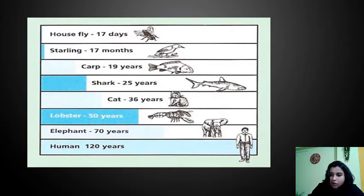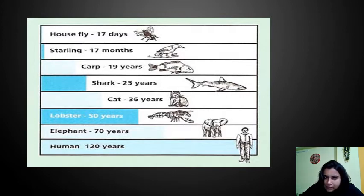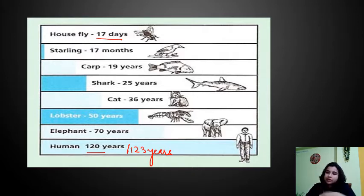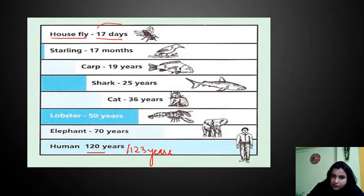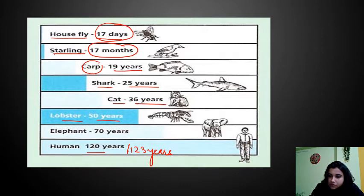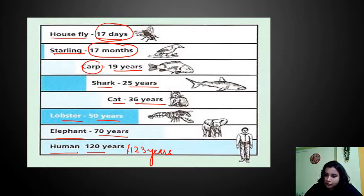Aging is related to lifespan. For a housefly the lifespan is 17 days, for starling it is 17 months, for carp it is 19 years, for shark it is 25 years, for cat it is 36 years, for lobster it is 50 years, for elephant it is 70 years, and for human it is 120 to 123 years. These are the lifespan examples of different organisms.